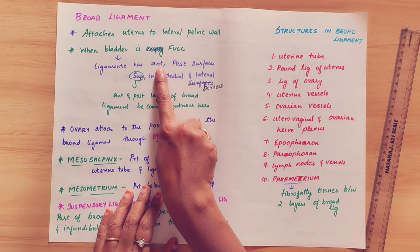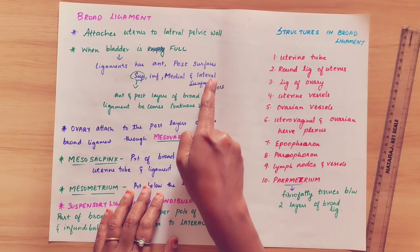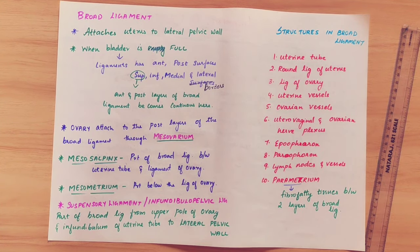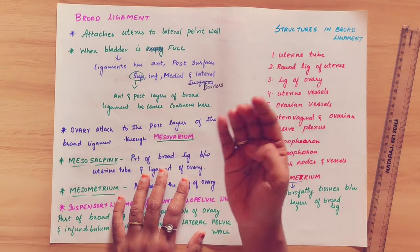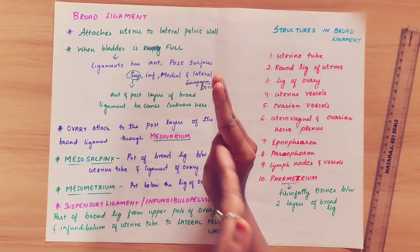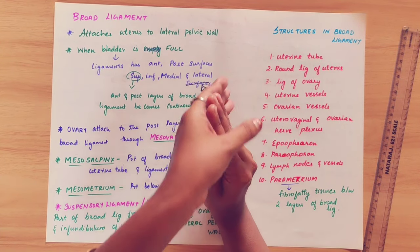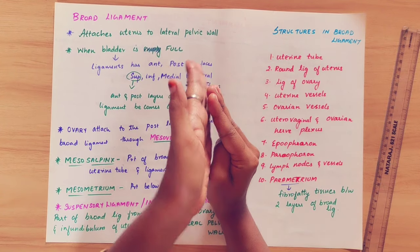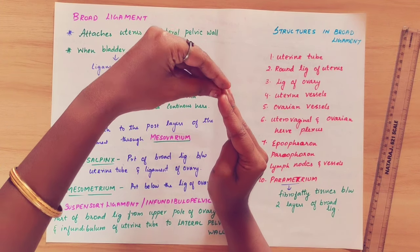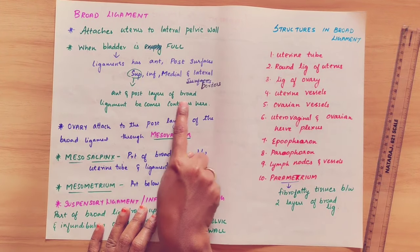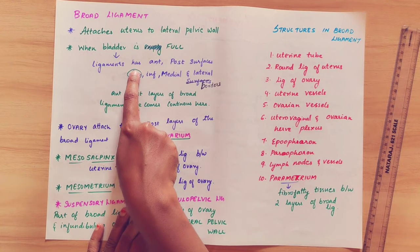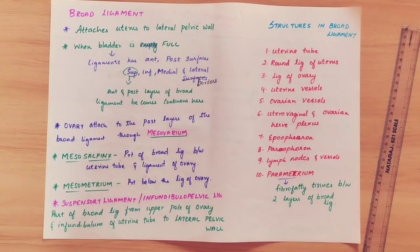The broad ligament has anterior and posterior surfaces, as well as superior, inferior, medial and lateral borders. The anterior and posterior surface layers are continuous. Coming to the subdivisions: the broad ligament is divided into three parts — mesovarium, mesosalpinx, and mesometrium.